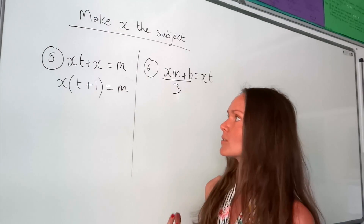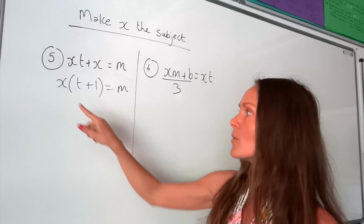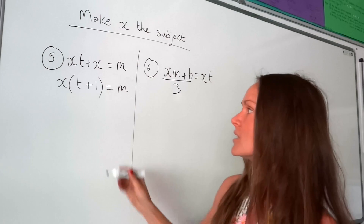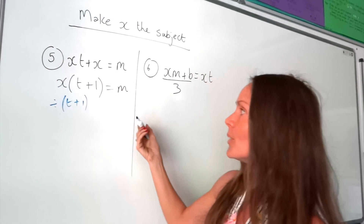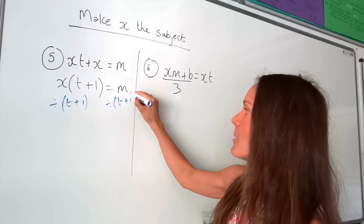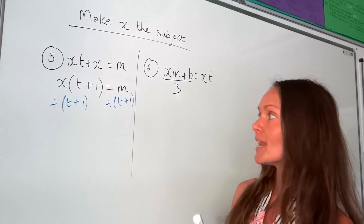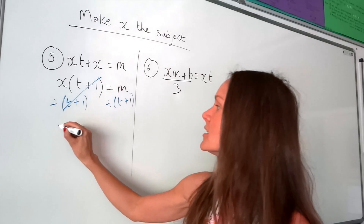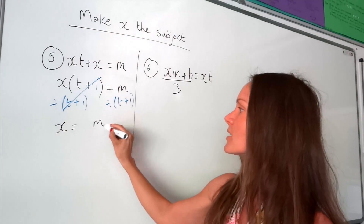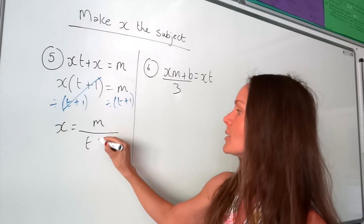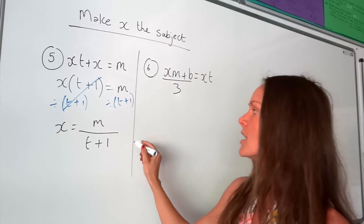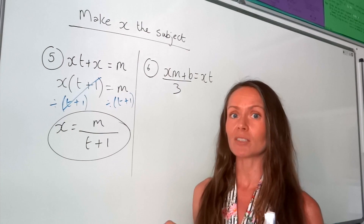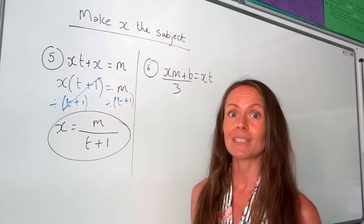Now I can separate x from everything else. Brackets mean multiply, so x is being multiplied by everything inside the brackets. The reverse is to divide, so we're going to divide both sides of the equation by (t plus 1). Remember to use the brackets because we're dividing by all of this. On the left-hand side, when we divide something by itself we get 1, so we're left with 1x. On the right-hand side, I'm going to write this as a fraction: m divided by (t plus 1). Remember, if you've got more than one x term and you've got to make x the subject, you need to factorize and factor out that x in order to separate it from everything else.